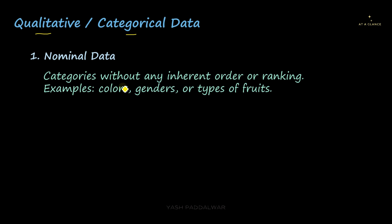In nominal data, categories without any inherent order or ranking are followed. Whenever the data points are not superior or inferior to each other, if they have equal importance, then it is nominal data. For example: colors, genders, or different types of fruits.